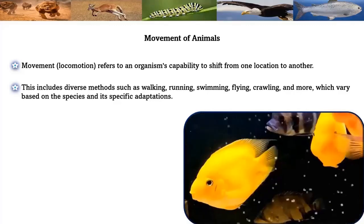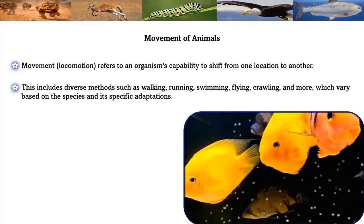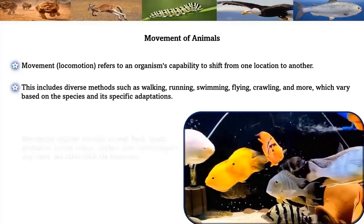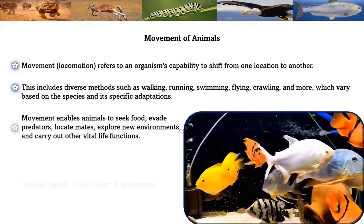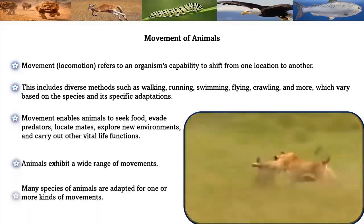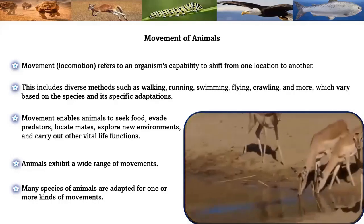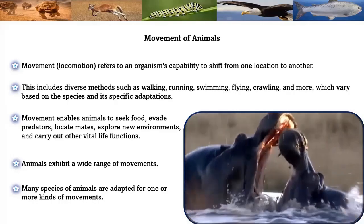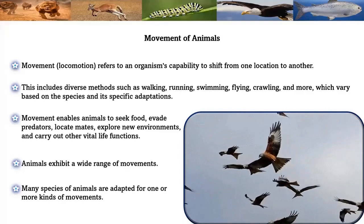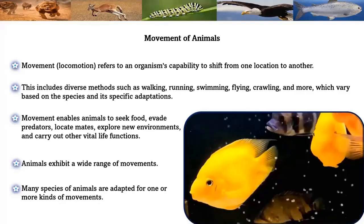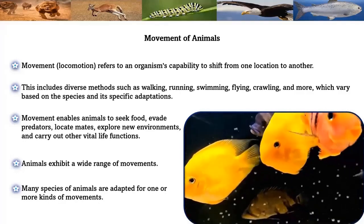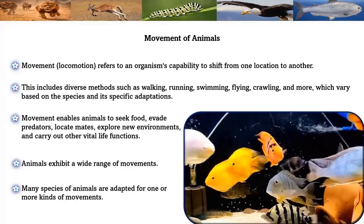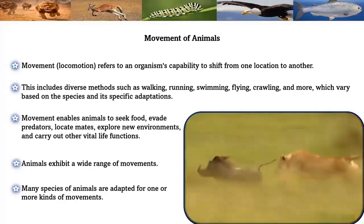These methods vary based on the species and its specific adaptations. Movement enables animals to seek food, evade predators, locate mates, explore new environments, and carry out other vital life functions. Animals exhibit a wide range of movements, and many species are adapted for one or more kinds of movements.